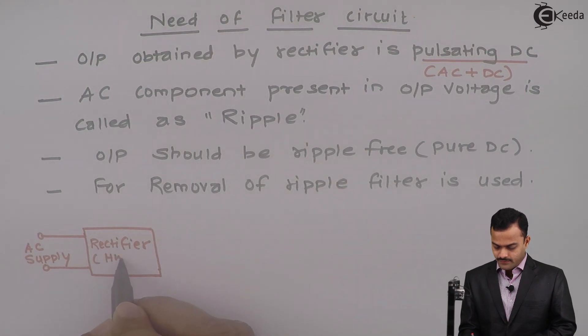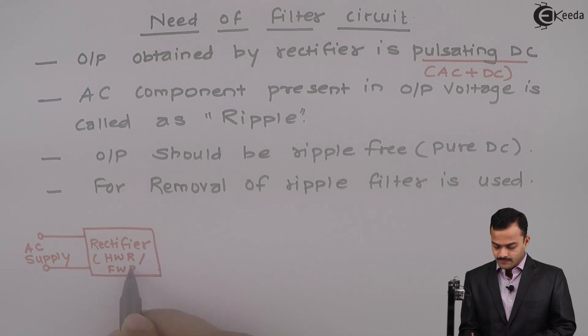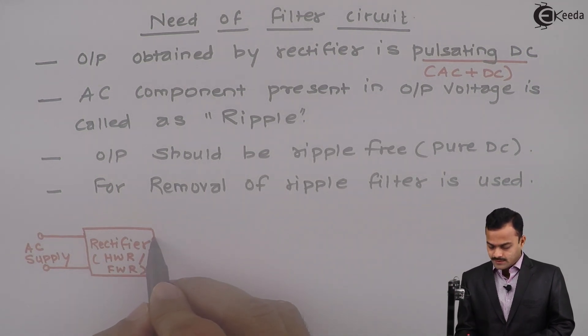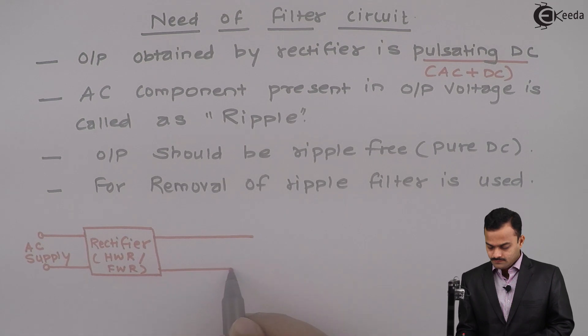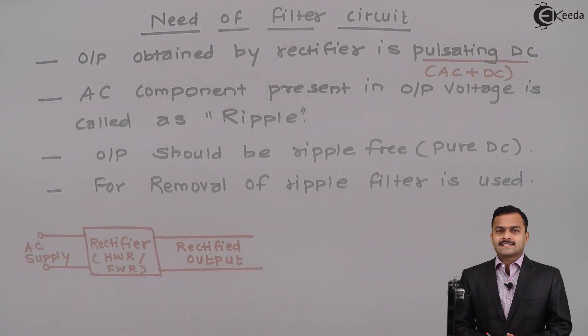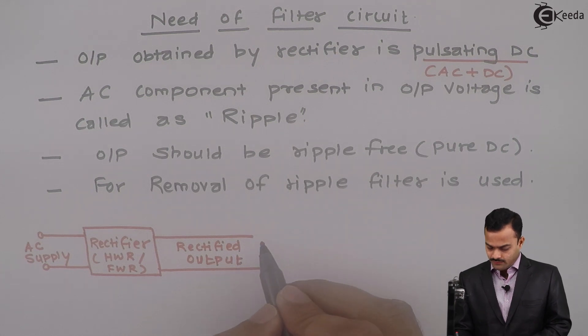So, here it is a half wave rectifier or full wave rectifier. Then the outcome of this block is a rectified output. As we discussed, this contains AC and DC. What we need to do? We need to make that free from AC. So, we connect filter circuit.